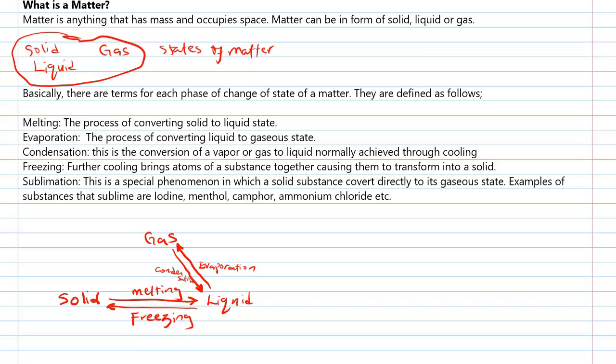There are special substances that skip the liquid phase and convert from solid to gas. This process is called sublimation. And such substances are said to have sublimed. Notable examples of substances that sublime are iodine, methanol, sulfur, ammonium chloride, etc.